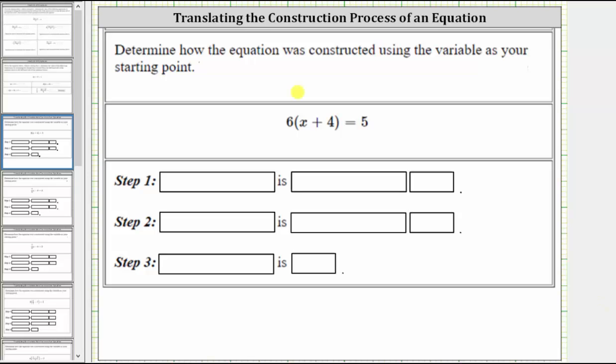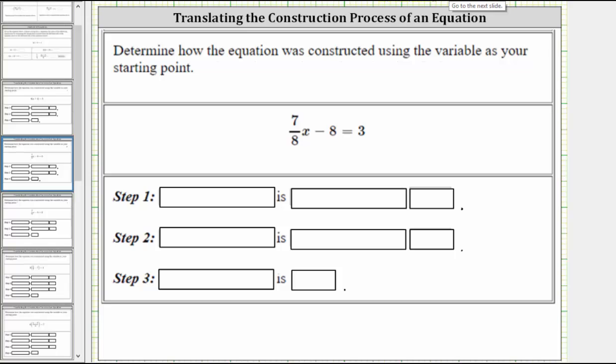We were asked to determine how the equation was constructed using the variable as the starting point. In this video, we will look at the construction of the equation 6(x + 4) = 5, as well as the construction of the equation (7/8)x - 8 = 3.